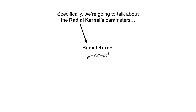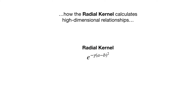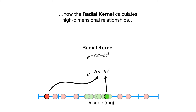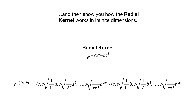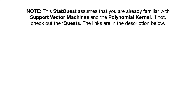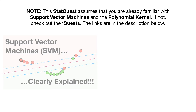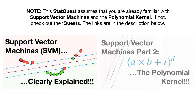Specifically, we're going to talk about the radial kernel's parameters, how the radial kernel calculates high-dimensional relationships, and then show you how the radial kernel works in infinite dimensions. Note, this StatQuest assumes that you are already familiar with Support Vector Machines and the polynomial kernel. If not, check out the quests. The links are in the description below.